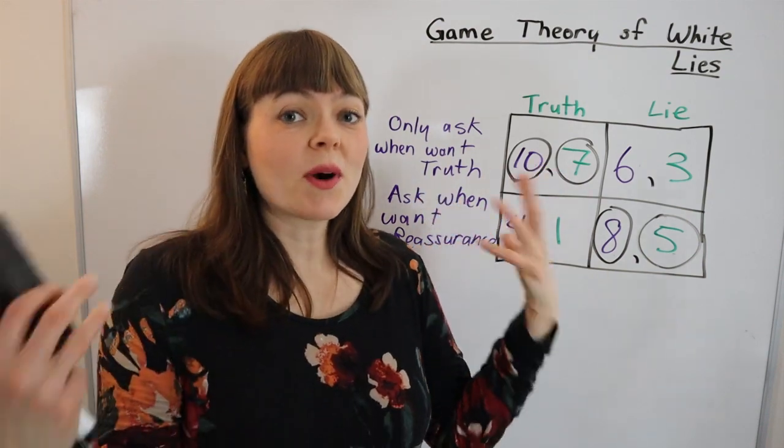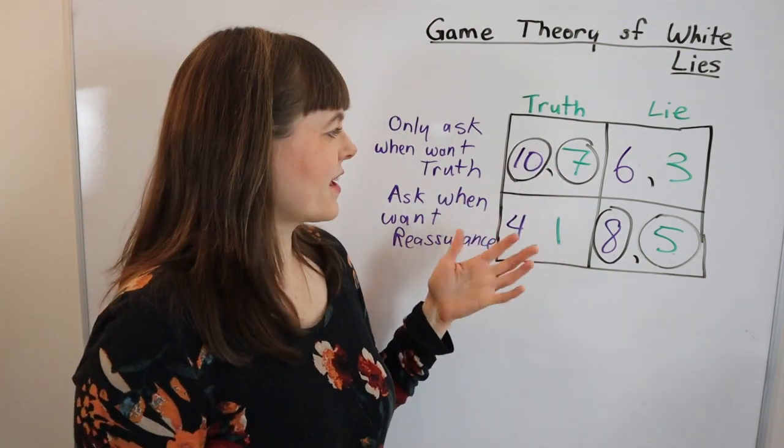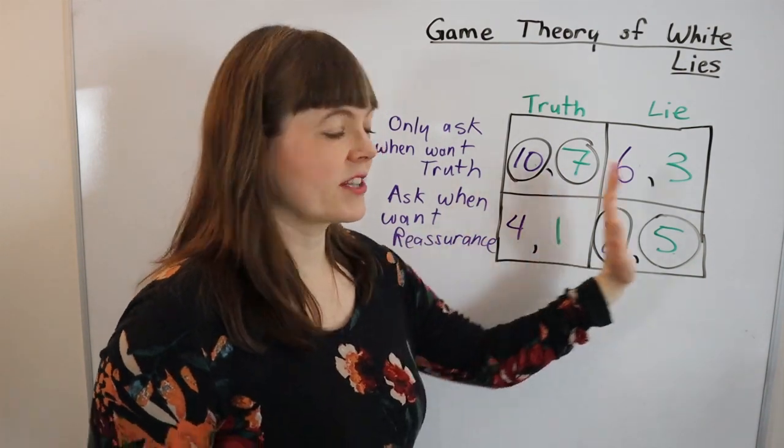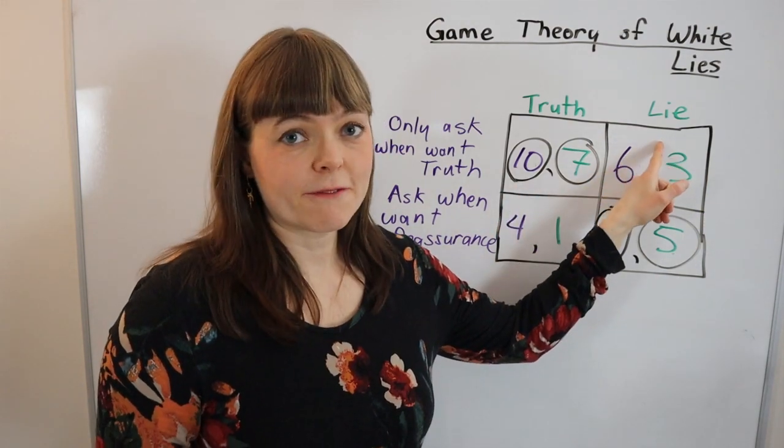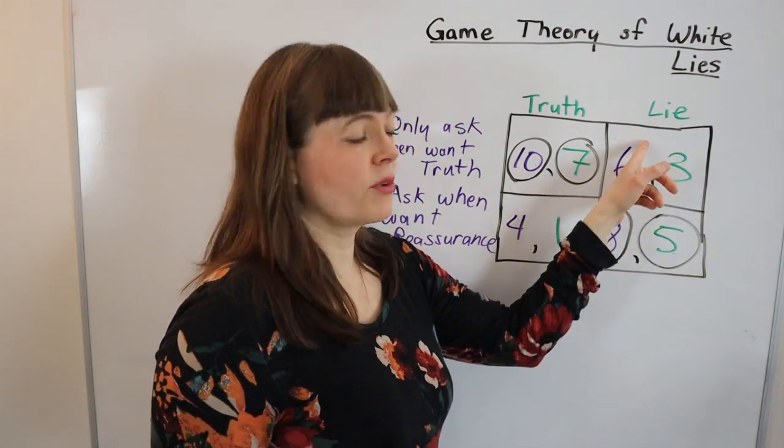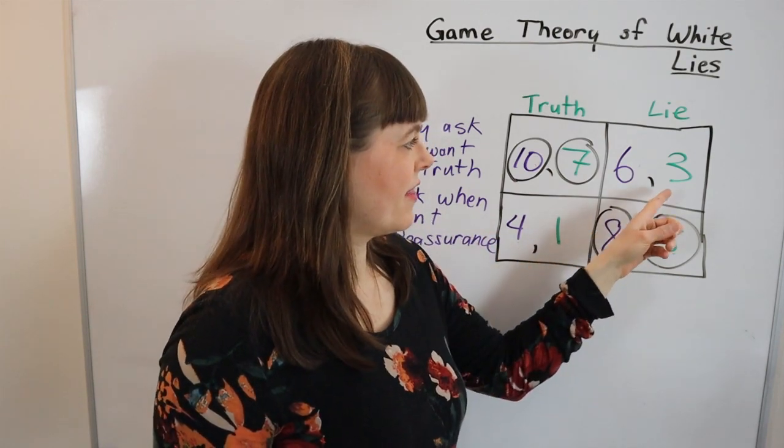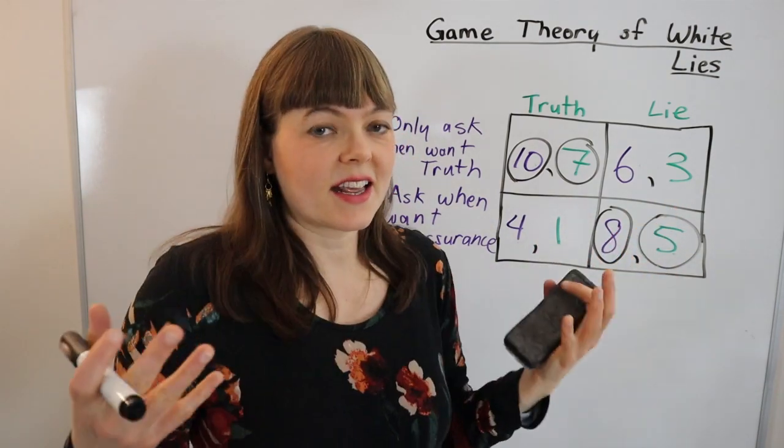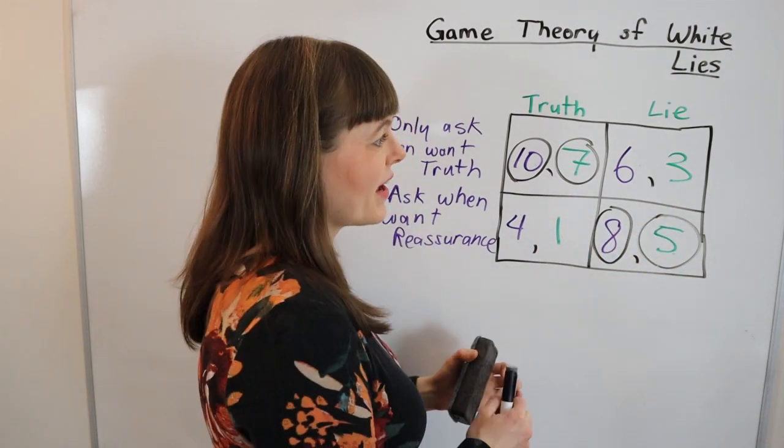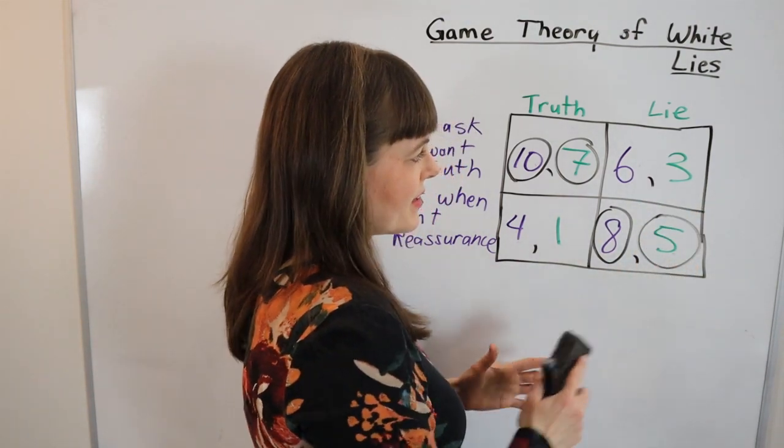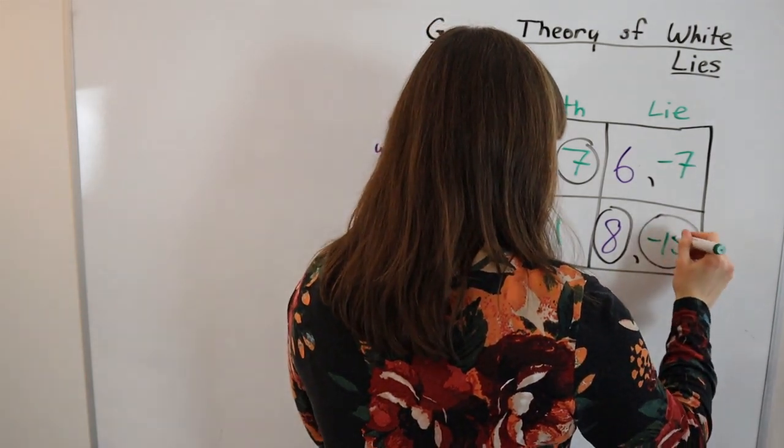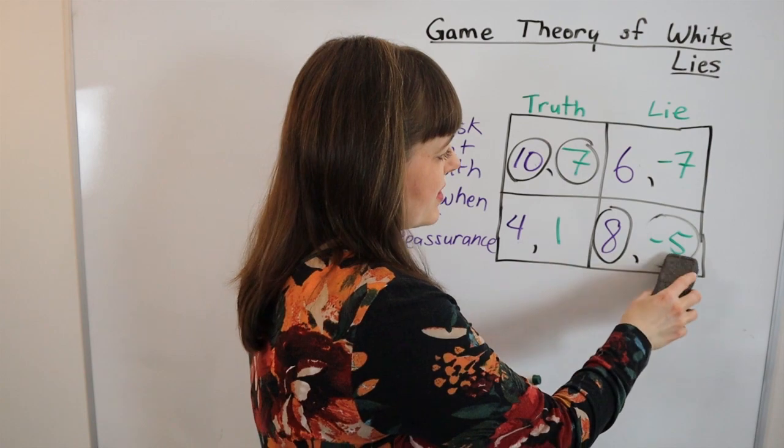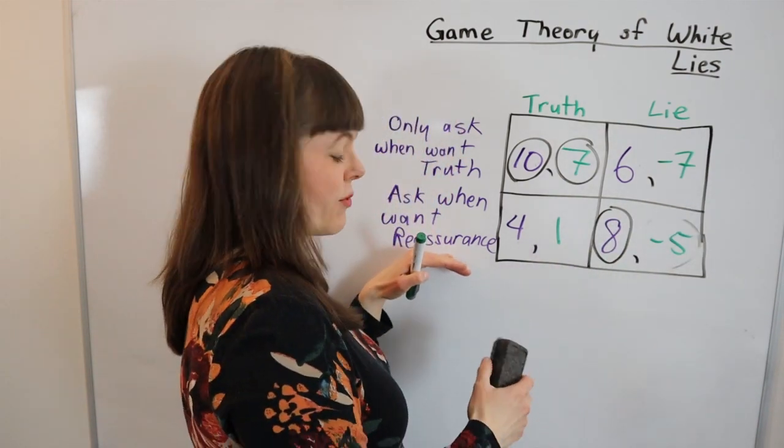You can start to get into nuanced analysis of this if you add things like different personality types who have different weights on the need for reassurance, different weights on how icky does lying feel. For example if you have a boyfriend who really feels icky if they lie, then that actually means you would have to change these payoffs so that they're way lower - like let's say he has a negative 10 disutility from lying, that means we have to subtract 10 from both spots.